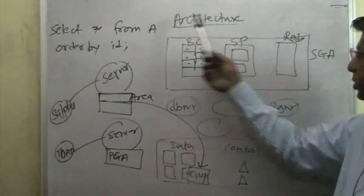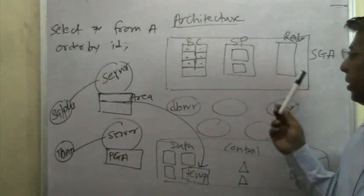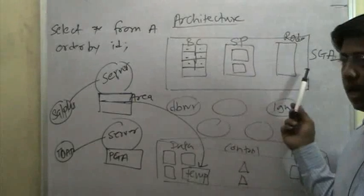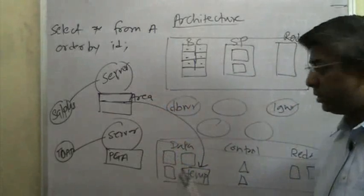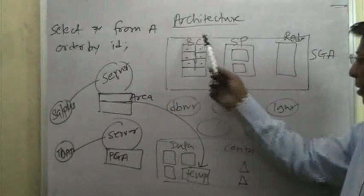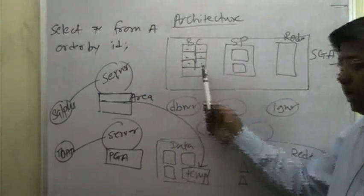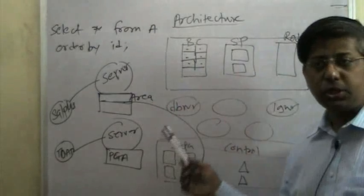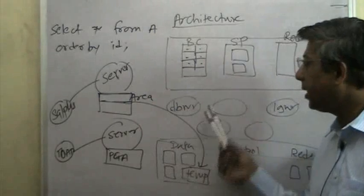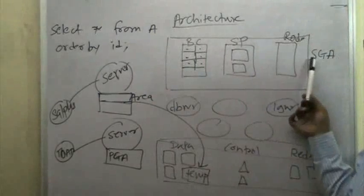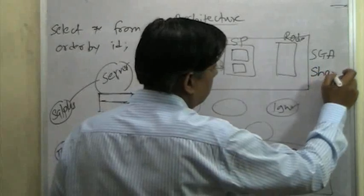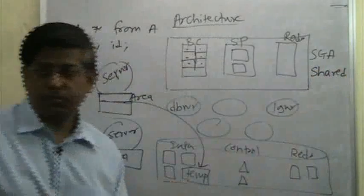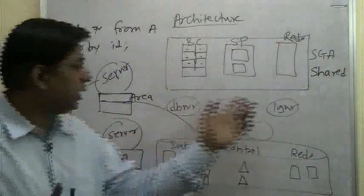Now, one thing about SGA that I want to talk about is, SGA is a memory area which is accessed by multiple server processes, by DBWR, by LGWR. People are writing to this, people are reading from this. So, there are multiple processes which are actually reading and writing from this SGA. And that is why many people call this as a shared global area also, because it is shared by multiple processes.